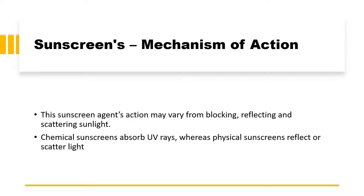How does sunscreen actually work? The sunscreen action may vary — it may block, reflect, or scatter the UV radiations. Chemical sunscreens absorb the UV rays, whereas physical sunscreens reflect or scatter the light. So there are three ways sunscreens work: blocking and reflecting/scattering (physical sunscreens), and absorbing UV radiations (chemical sunscreens).